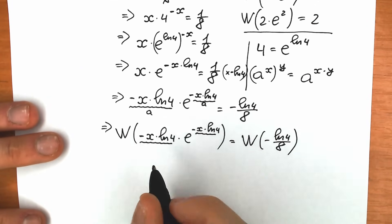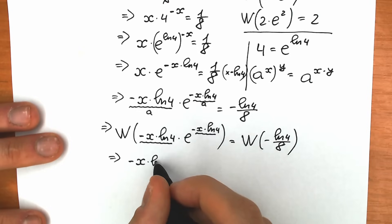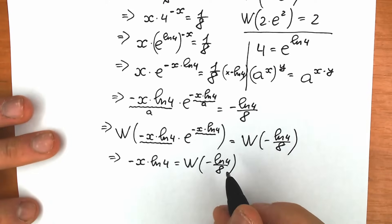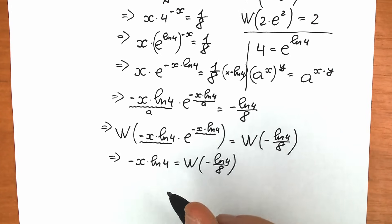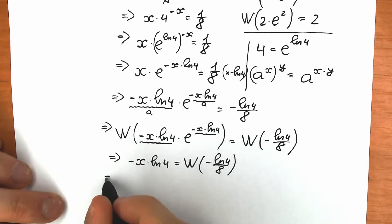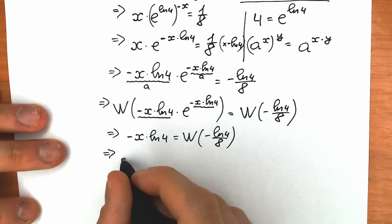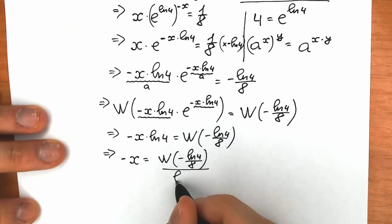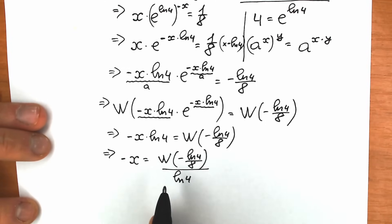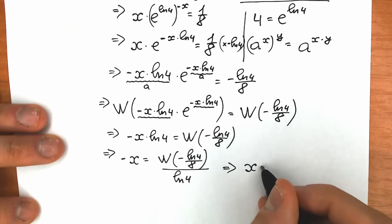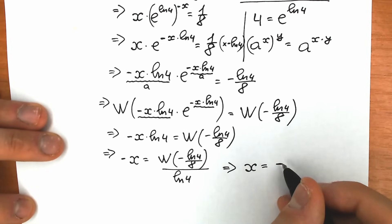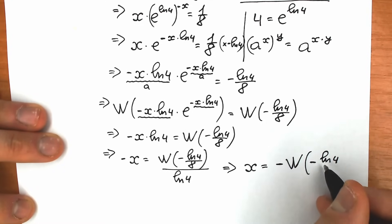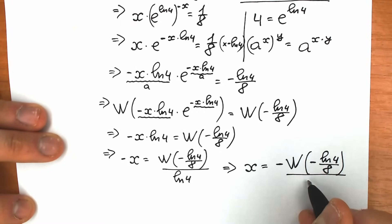Let's apply our Lambert W function on the left side. Lambert W of minus x times natural log 4 times e to the power minus x times natural log 4, equals Lambert W of minus natural log 4 over 8. The left side simplifies to minus x times natural log 4. Now dividing both sides by natural log 4, we get minus x equals Lambert W of minus natural log 4 over 8, divided by natural log 4.